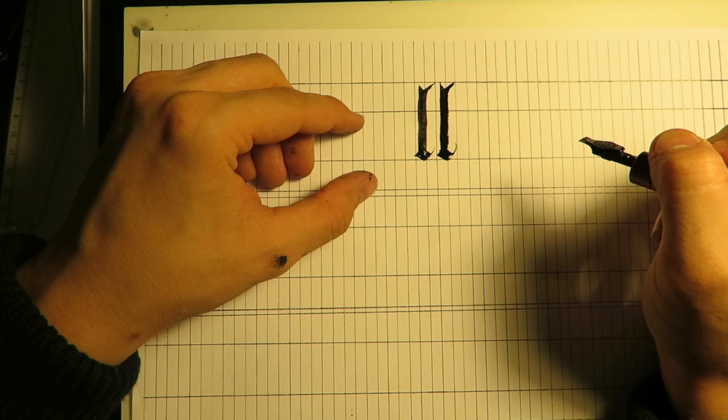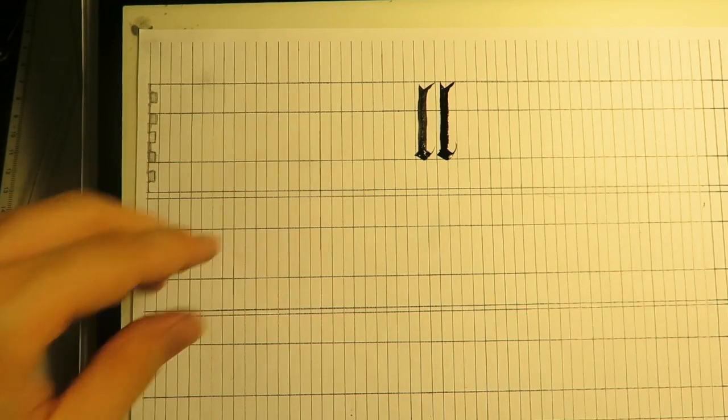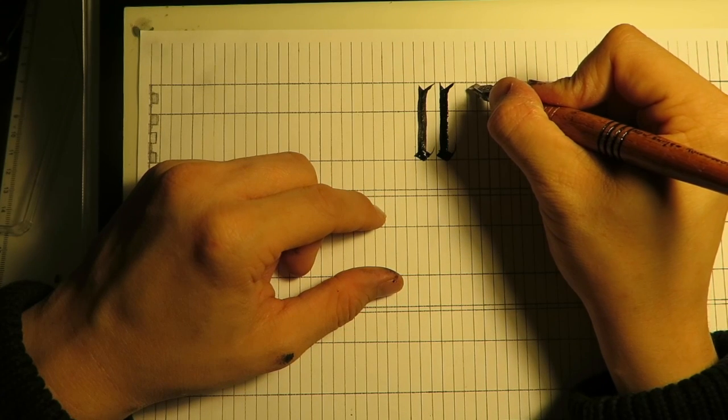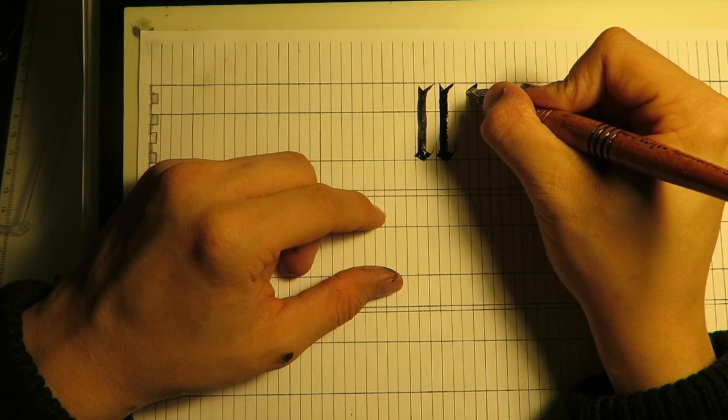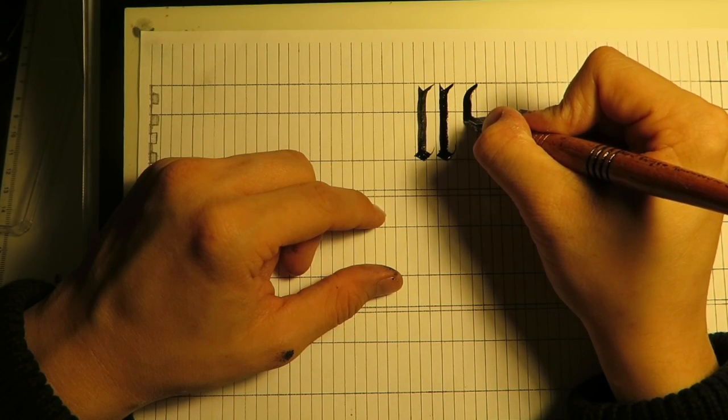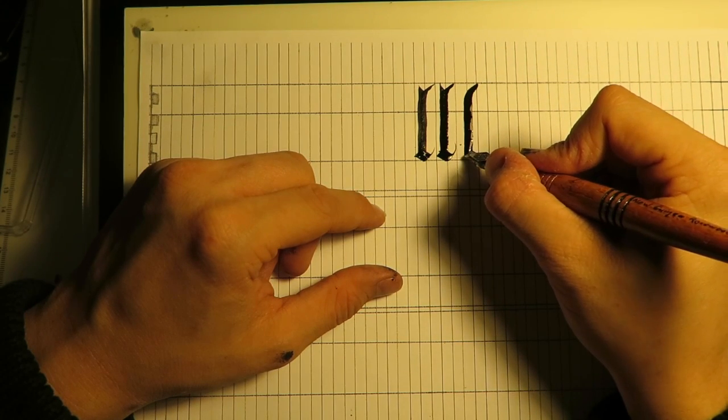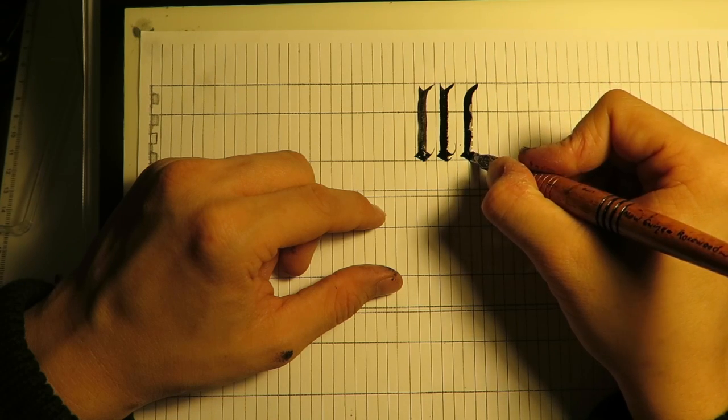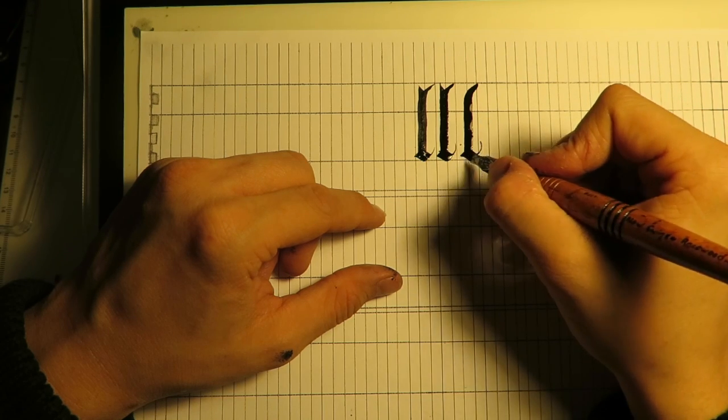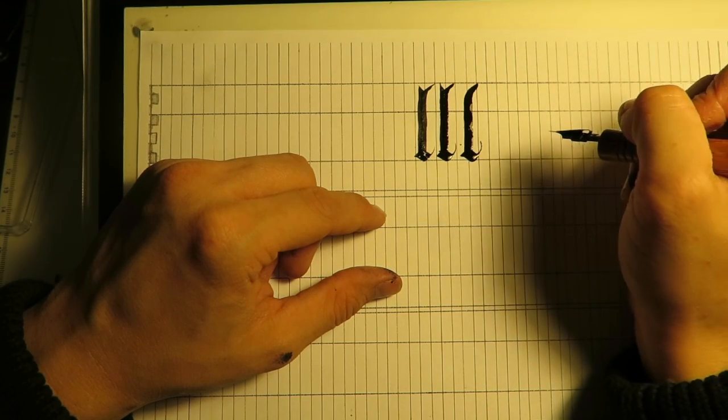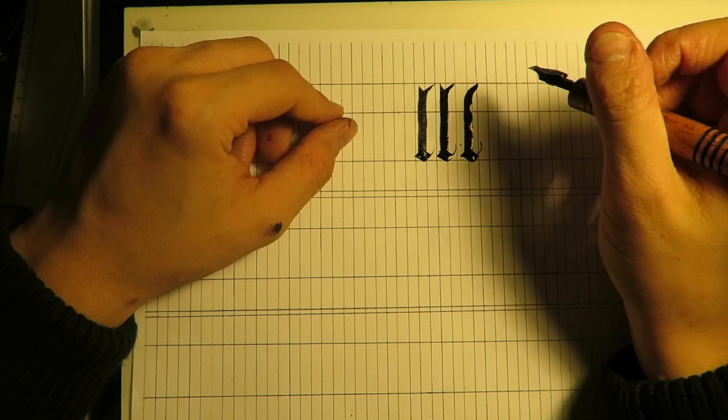The next letter that we'll have a look at is the F. The F is fairly similar to the L. You start with that same slight curve, and straighten out until you reach almost the bottom of the X height. Pull into the diamond, and then flick up. You can see here, I've gone and overloaded the nib. It's gotten a little bit blobby. But it's a learning process, and even I'm still learning.